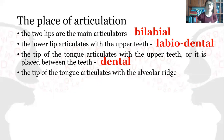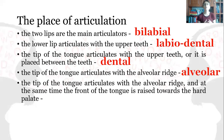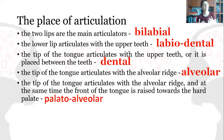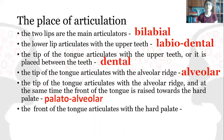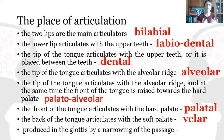When the tip of the tongue articulates with the alveolar ridge, we have an alveolar consonant. When the tip of the tongue articulates with the alveolar palate and the front of the tongue is raised towards the hard palate, a palatal-alveolar sound is articulated. When the front of the tongue articulates with the hard palate, that is a palatal sound. The back of the tongue articulating with the soft palate gives a velar sound, and a sound produced in the glottis is a glottal sound.